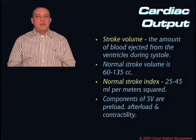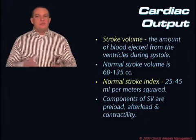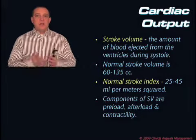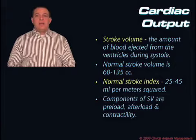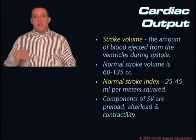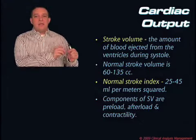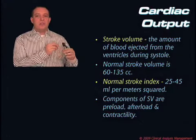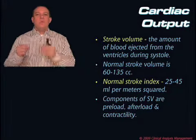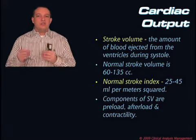That range isn't specific — it's not indexed to body surface area, just like cardiac output isn't. A stroke volume of 60 to 135 cc's can mean completely different things for our 5-foot 220-pound patient compared to our 6-foot-2 280-pound patient. So just like we index cardiac output using a formula based on body surface area, we do the same with stroke volume, and we call that the stroke index.